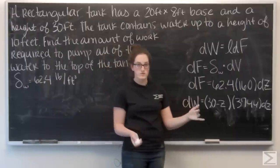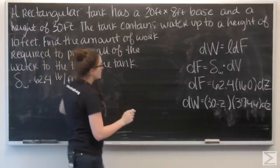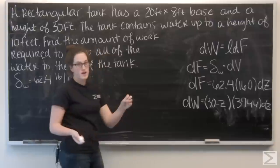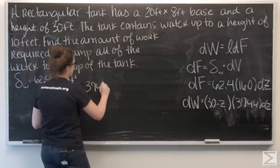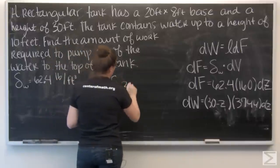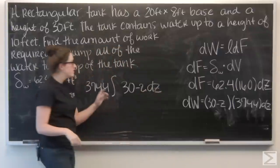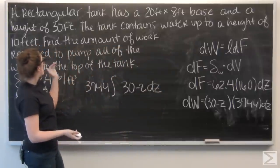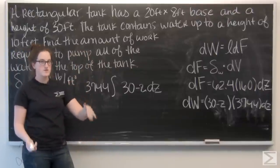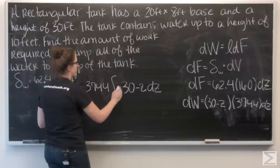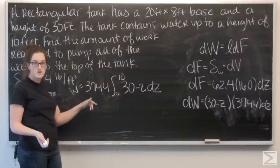So, I have delta work is 30 minus z times 3,744 dz. So, now let's integrate. I know the water is in the tank up to a height of 10 feet. So, from the bottom, z equals 0 up to z equals 10.